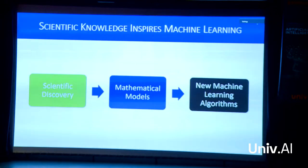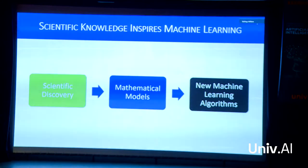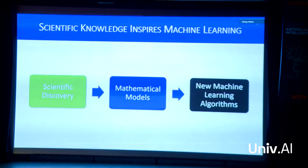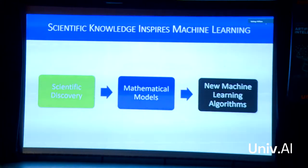But what I really want to talk about is how scientific discovery inspires new machine learning. The previous example was machine learning inspiring scientific discovery, but it also goes the other way around. This is much more close to what I do — I try to understand science and how biology computes, and use that to design new machine learning algorithms. The process goes: take some scientific discovery, maybe studying the brain, build a mathematical model, then emulate that model on a computer to get it to work like the brain does.